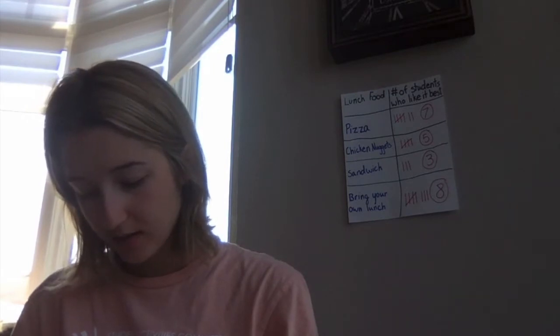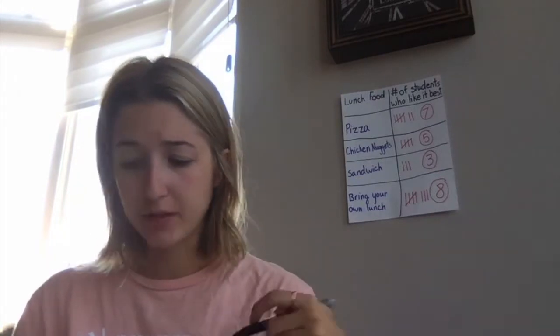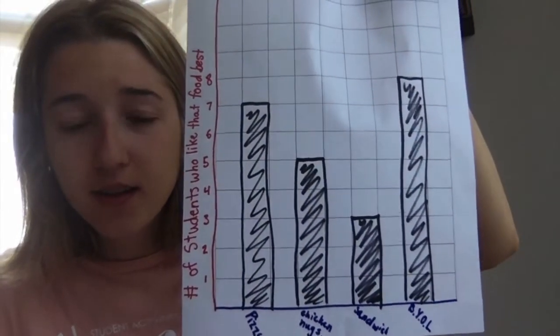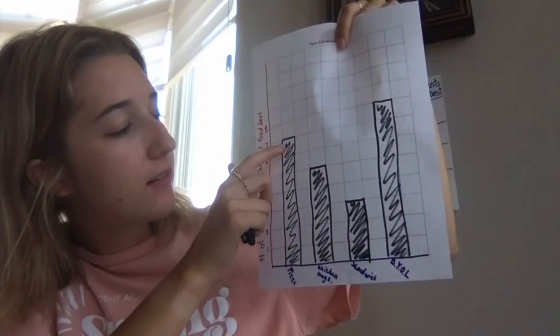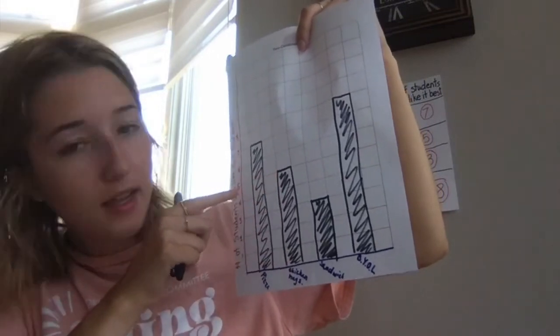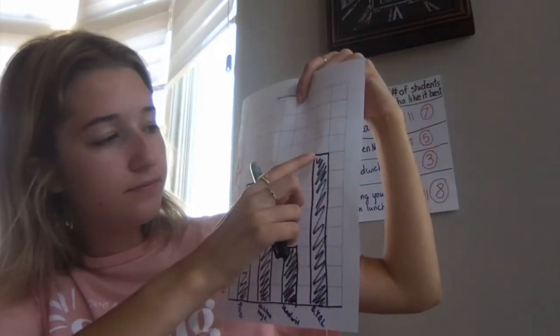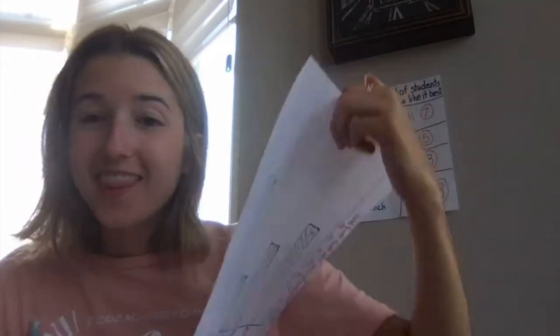Three people like sandwiches best, so I'm going to make a bar up to three for sandwiches. Then we have the bring-your-own-lunch team, so I'm going to make a bar that goes up to eight. Now here is my completed bar graph — does it look similar to yours? We've got seven for pizza, five for chicken nuggets, three for sandwiches, and eight for bring your own lunch. Thank you for helping me make this graph!